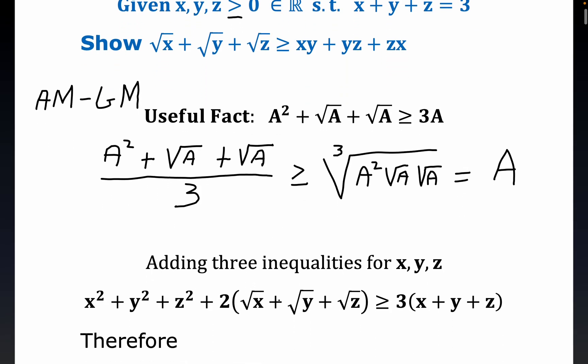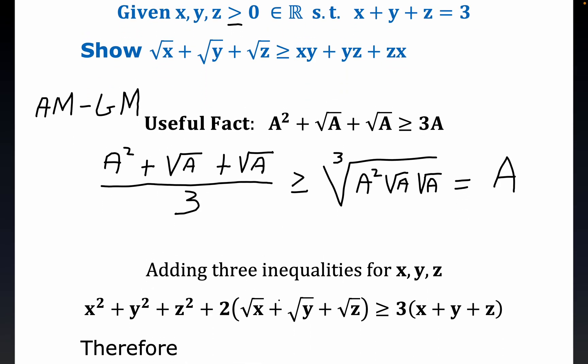We actually use this result three times for the variables in the problem X, Y, and Z. And we get this statement here. And again, what we did, literally, is created this inequality three times with the variables X, Y, and Z, and then just added them up, which is a property of inequalities. And we get this statement here.